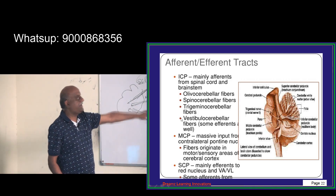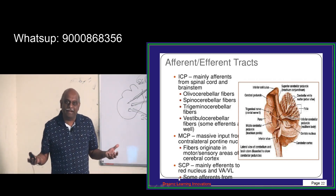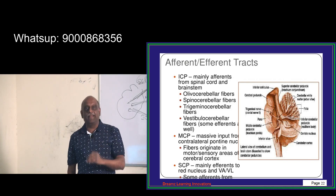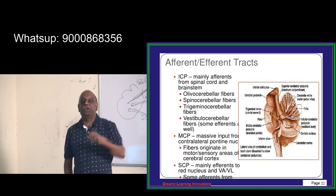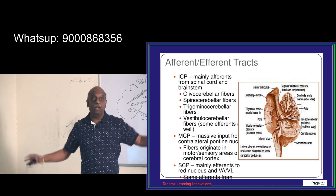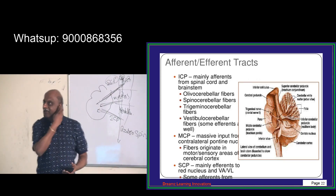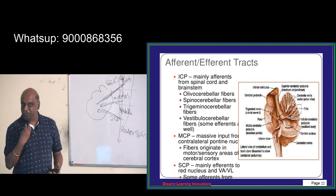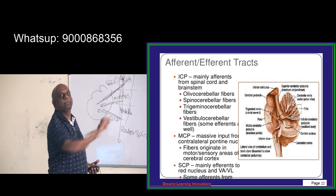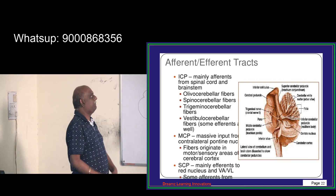There are also vestibulocerebellar fibers. The vestibular nucleus — associated with cranial nerves eight, nine, and ten — is located in the medulla. These vestibulocerebellar fibers receive a lot of information about balance from the ears. That information comes to the medulla, and from the medulla, through the inferior cerebellar peduncle, the information reaches the cerebellum.